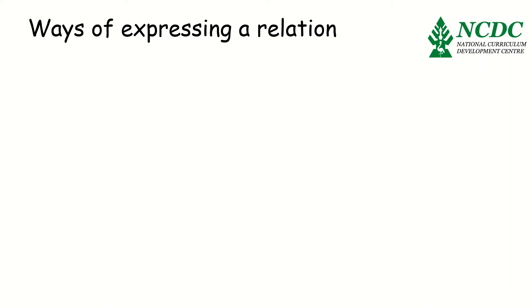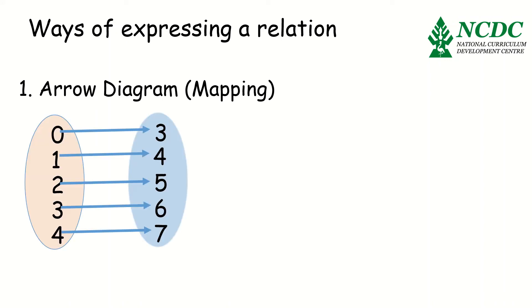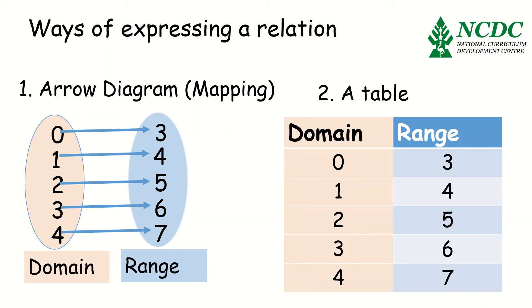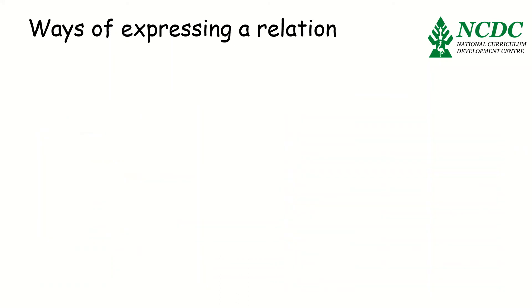There are four ways through which you can express a relation. The first one, and the one that we have used most, is using an arrow diagram. And this is called a mapping. This is an example of arrow diagram. You have your domain and a range. The next way of expressing a relation is using a table. So, you can have your domain and range put in a table as shown on your screen.